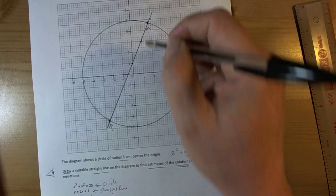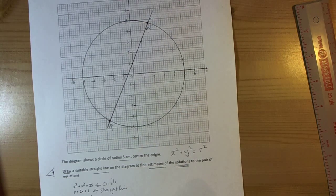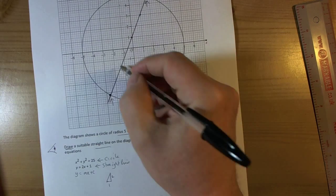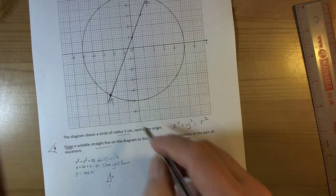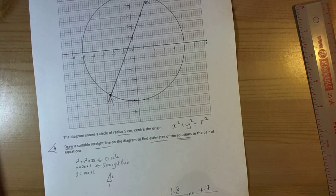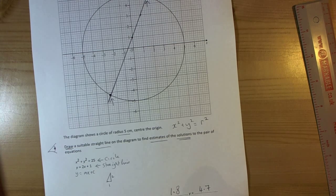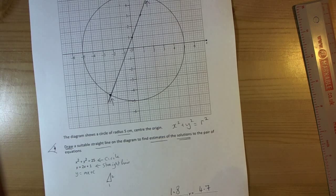So if I look carefully and read through the scale, then I find the first one is at 1.8 and 4.7. And then if I read carefully coming down here, it's at negative 2.6 and negative 4.2.